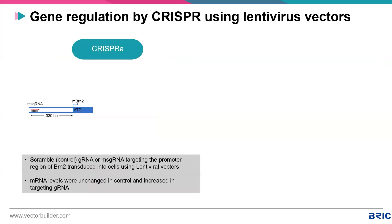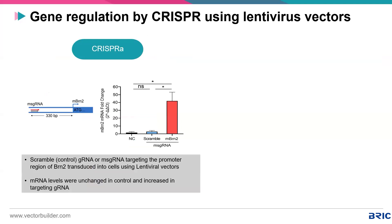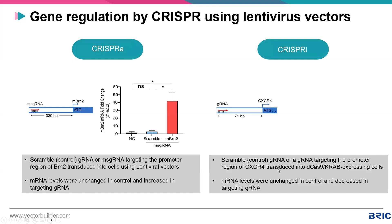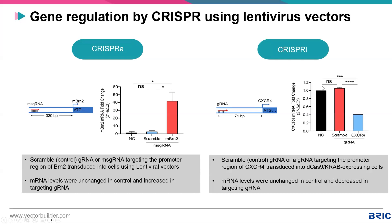Another example demonstrates lentiviral vectors for gene regulation — CRISPRa and CRISPRi. In the CRISPRa example, the promoter region of the BRN2 gene is targeted by the CRISPRa system; mRNA levels increased in the experimental sample compared to unchanged controls, confirming transcriptional activation. In the CRISPRi example, the promoter region of the CR4 gene is targeted and delivered using lentiviral vectors; mRNA levels were unchanged in controls but greatly reduced in the experimental sample, confirming repression of the target gene.